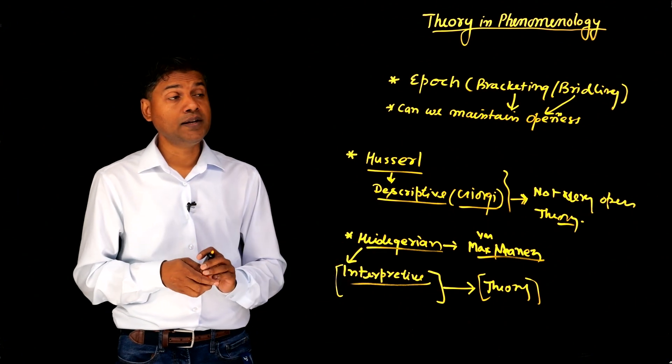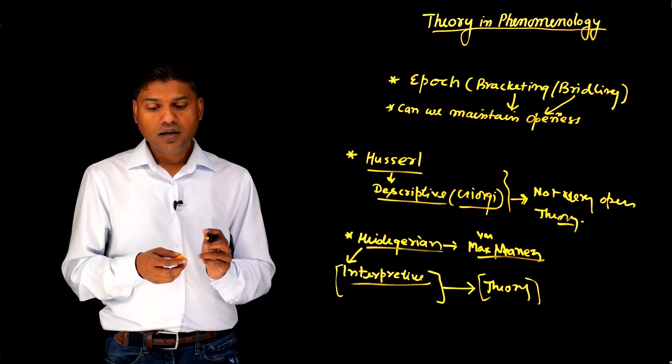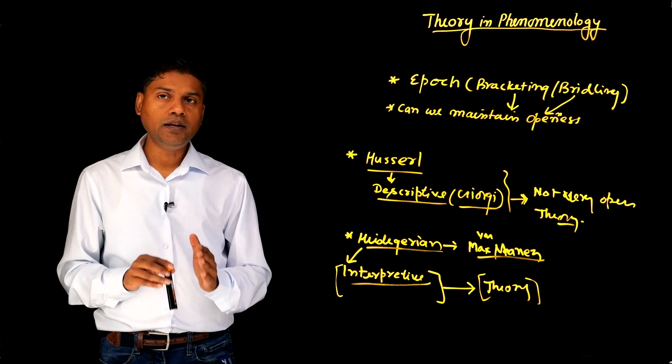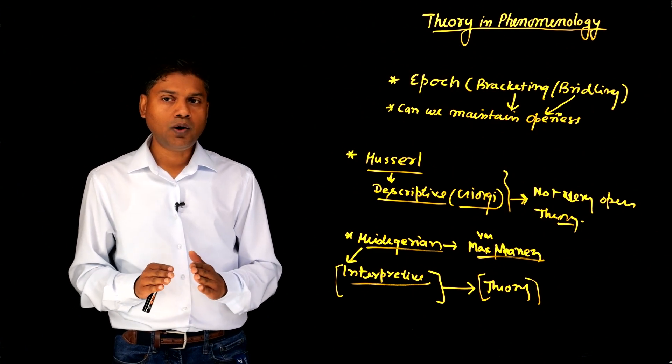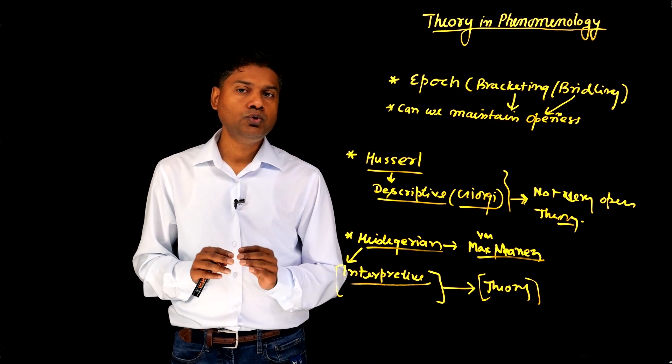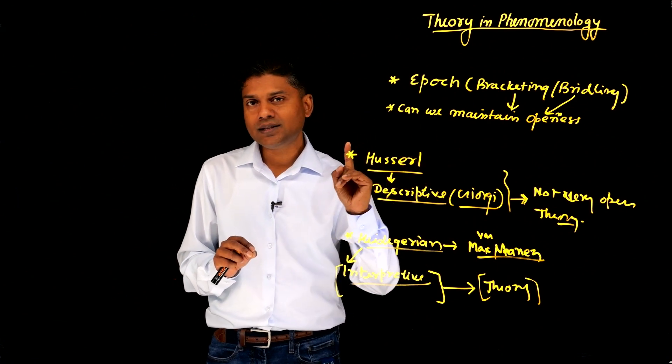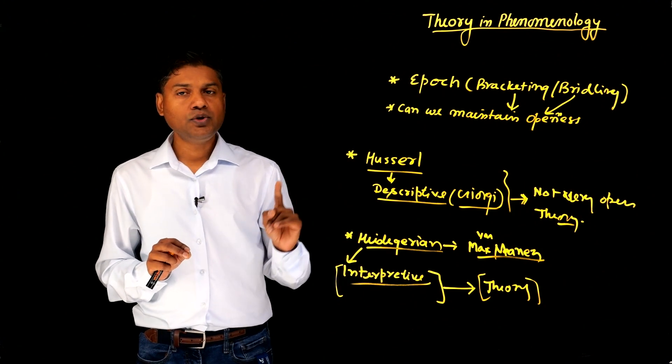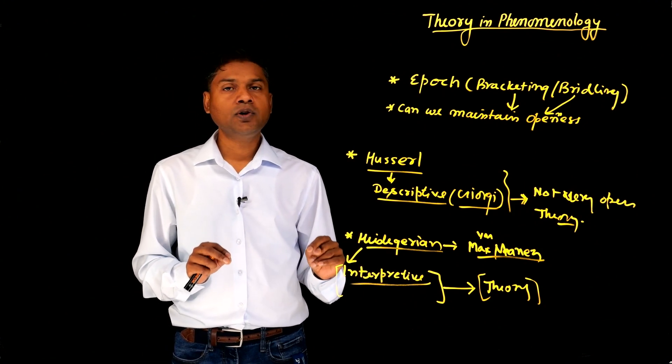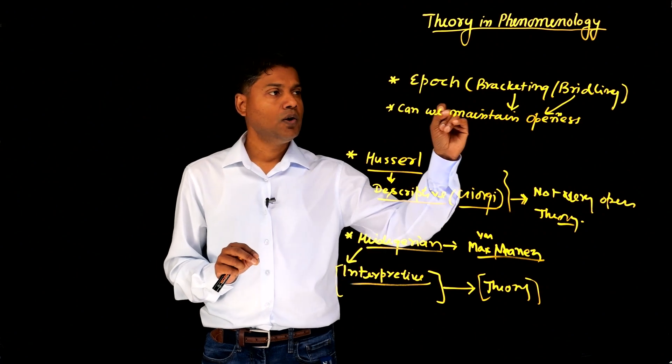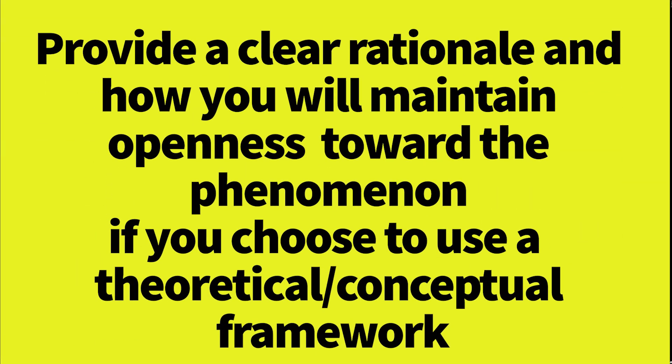However, as I have been emphasizing time and again, you need to really have a clear rationale of how and why you are using a theory. And in phenomenological research, you have to clearly state, if you are using a theory or conceptual framework, how you are going to maintain openness towards the phenomenon, bracketing, bridling, whatever you choose to use in your phenomenology. This has to be clearly articulated. Then you can use a theory in phenomenology.